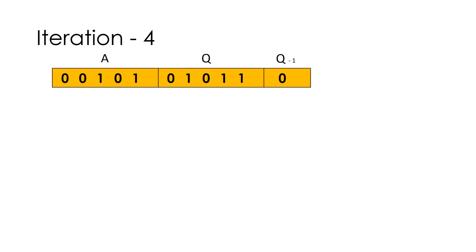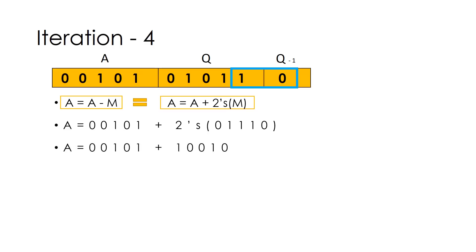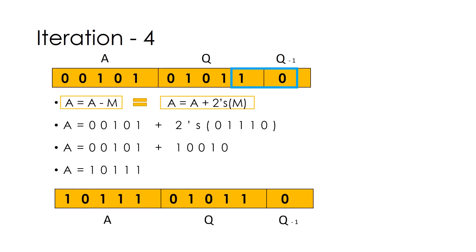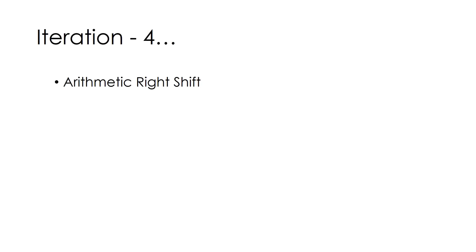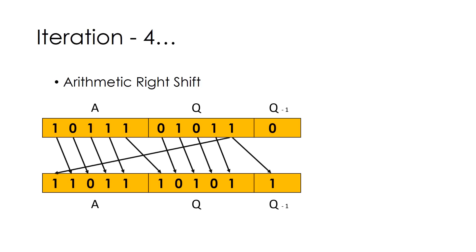Now we are in iteration 4. We check the last bits of Q and Q minus 1, and those bits are 1 and 0. Thus, we need to perform A = A minus M, which we can represent as A = A plus the two's complement of M. The two's complement of 0 1 1 1 0 is 1 0 0 1 0. Therefore, the value of A will be 1 0 1 1 1. The row below shows the new value of A with no change in Q and Q minus 1. Then we perform the arithmetic right shift, and the row below contains the new values of A, Q, and Q minus 1 after the shift.